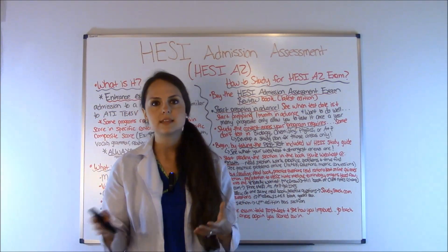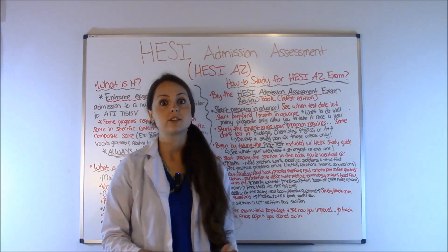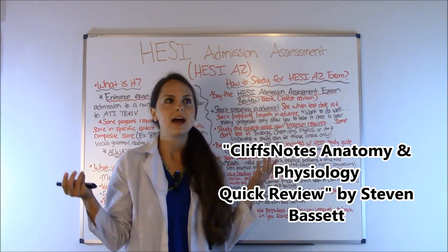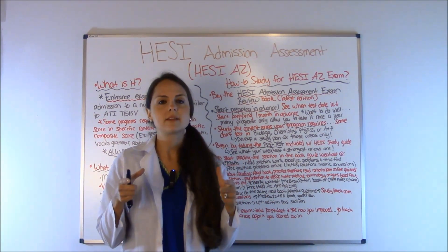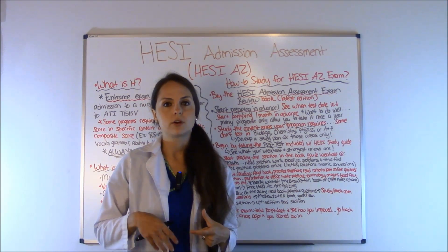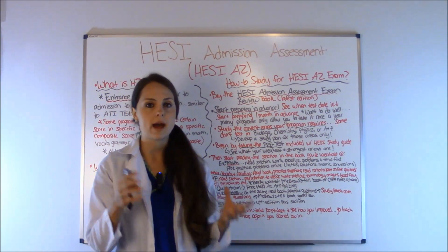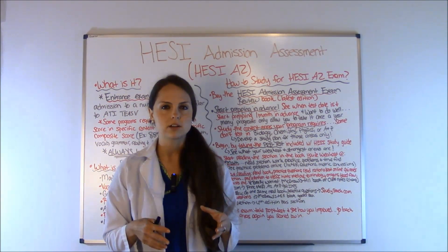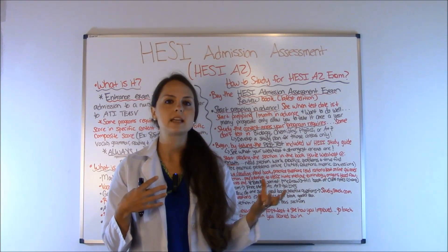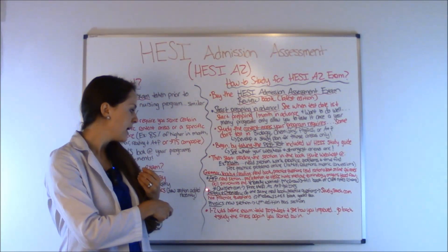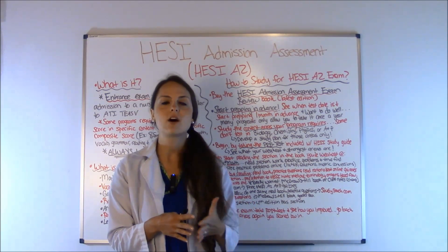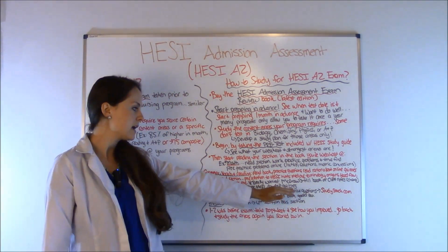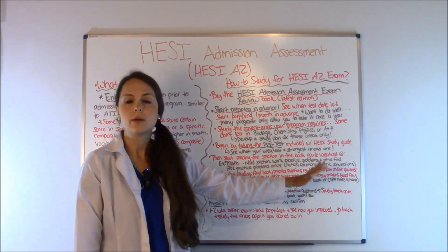If you're a little rusty in this area — say it's been a long time since you've taken anatomy and physiology or you didn't do well in the class — I recommend getting the Cliff Notes book. It's a thin, inexpensive book, around eight to nine dollars on Amazon, and it breaks down the basic concepts of anatomy and physiology. Another great book that students who passed the HESI A2 recommend is the McGraw-Hill book, which has a good anatomy and physiology section along with chemistry and biology, plus practice questions. Also, Quizlet at quizlet.com has free quizzes specifically geared towards the HESI A2 exam.